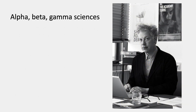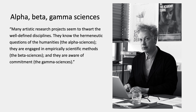Slagger has an interesting passage in which he talks about the alpha, beta, and gamma sciences, which is a useful way of thinking about this whole question. Many artistic research projects seem to thwart the well-defined disciplines. Artistic research knows the hermeneutic questions of the humanities — the alpha sciences. It's engaged in empirically scientific methods — the beta sciences. And it's a way of commitment — the gamma sciences. He's saying that artistic research is aware of and engaged with these three other sciences.